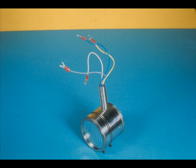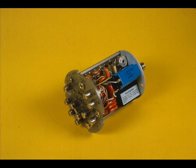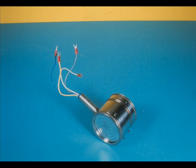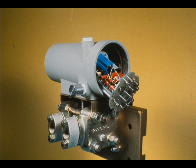The transmitter consists essentially of a variable reluctance measuring head and an amplifier. The measuring head is made of stainless steel. The amplifier is mounted within a die-cast aluminum housing.